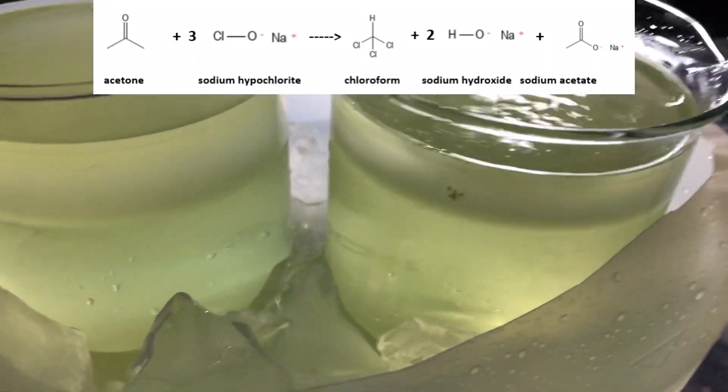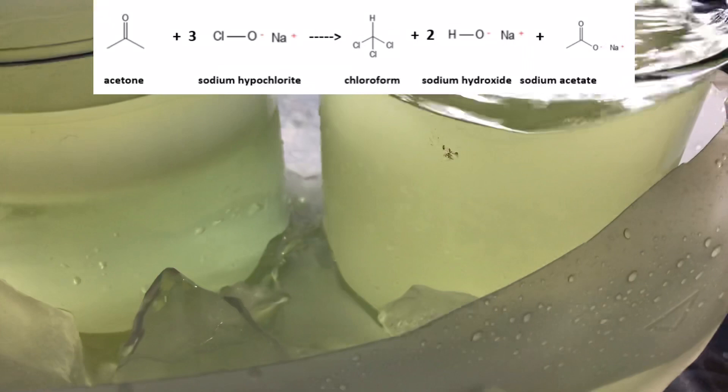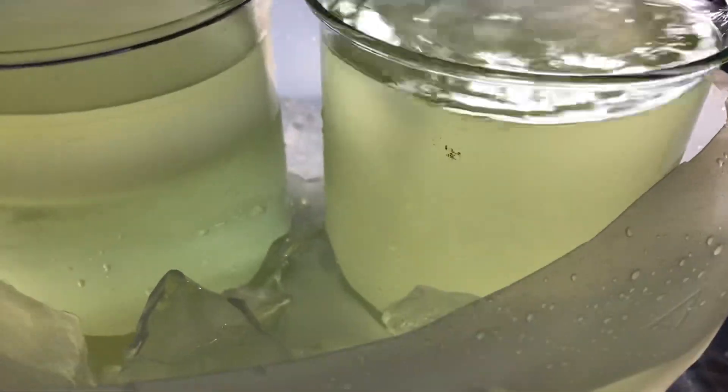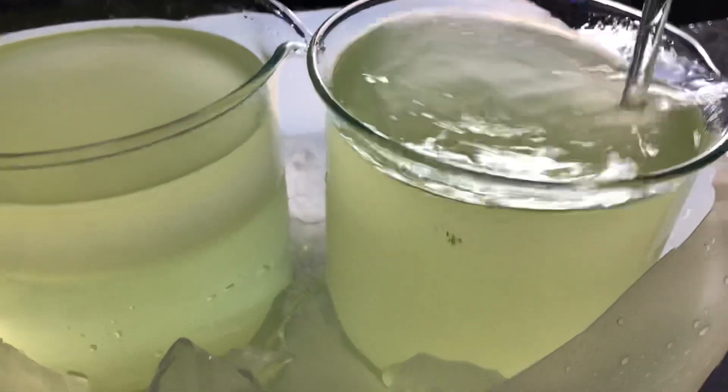If the reaction mixture gets too hot, the sodium hypochlorite will break down to form sodium chlorate and sodium chloride, and therefore the sodium hypochlorite concentration will decrease.